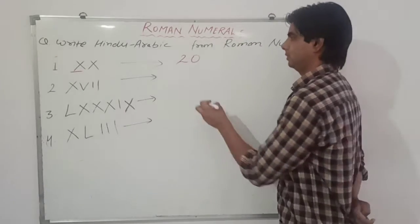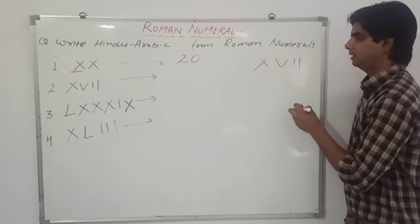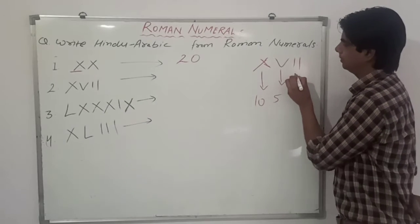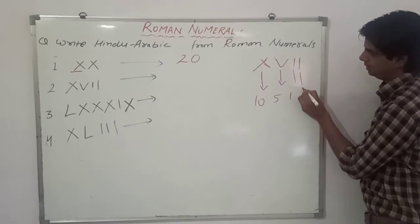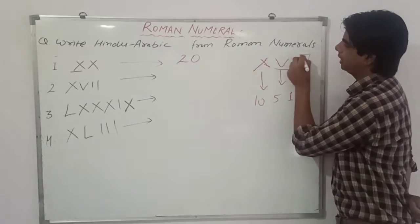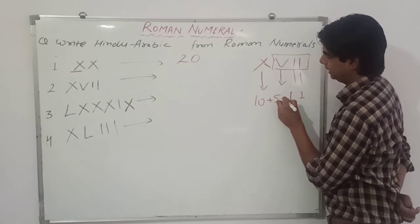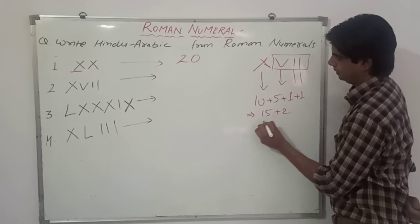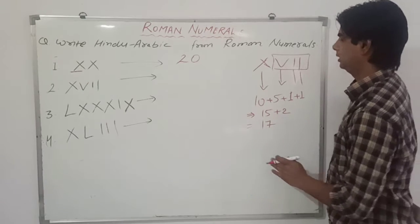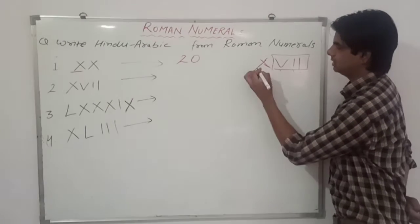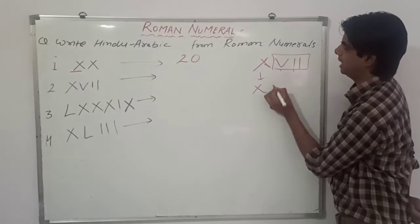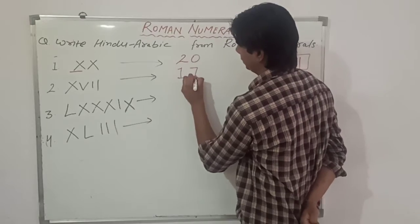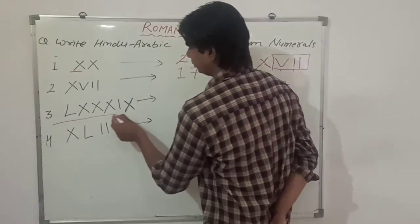Next is XVII. X means 10, V means 5, I means 1, and I means 1. These are all written to the right of X so they all get added. It becomes 10 plus 5 is 15, plus 1 plus 1 equals 17. So XVII equals 17.